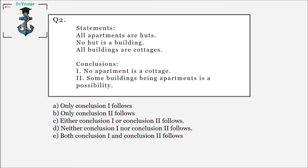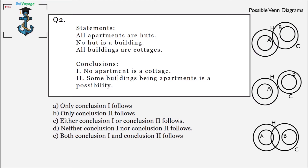Moving on to the next question: all apartments are huts, no hut is a building, all buildings are cottages. We have two conclusions as well. Pause the video, try to make a Venn diagram on your own, and then see the three possible Venn diagrams I have made.